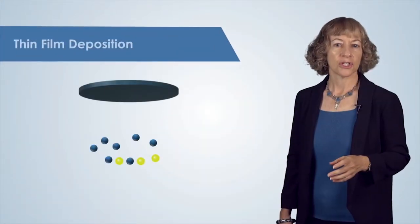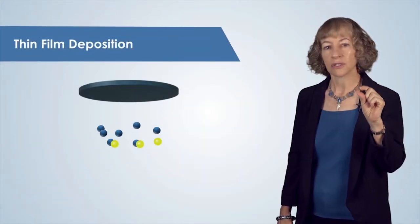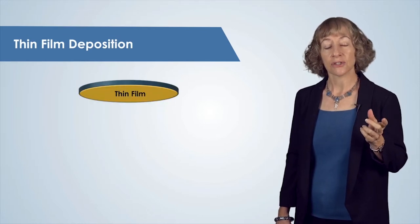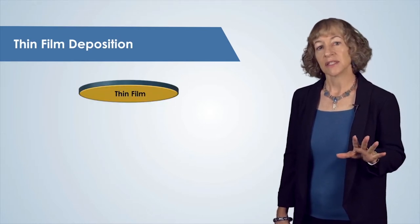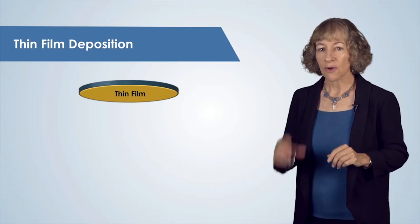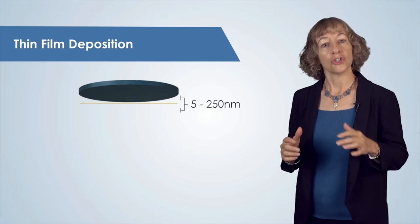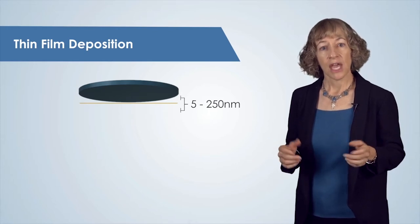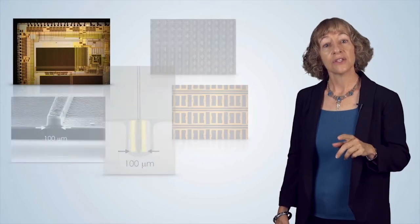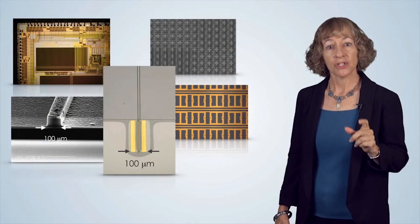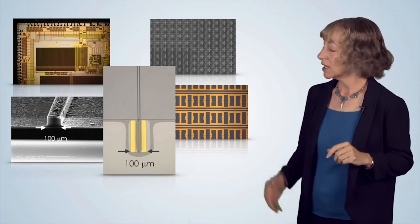Welcome. I'm Nan Jokerst and in this video we will talk about vacuum systems and mechanical pumps. Vacuum systems are used to deposit thin layers of materials such as metals and insulators onto our samples. The thicknesses of these vacuum deposited layers are very thin, on the order of 5 nanometers to 250 nanometers, and are used in many materials and devices including integrated circuits and the lasers and metamaterials that my students make in our clean room at Duke, as shown here.